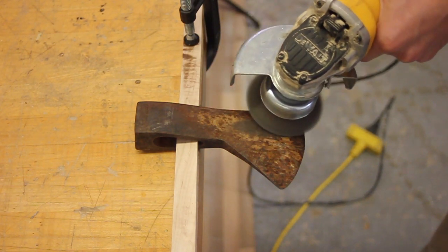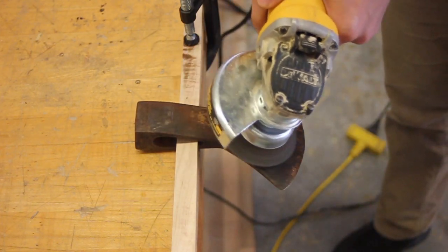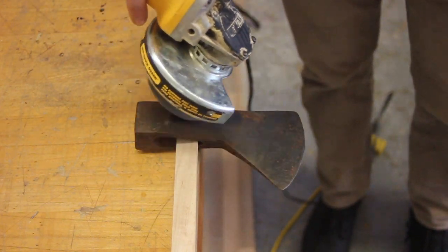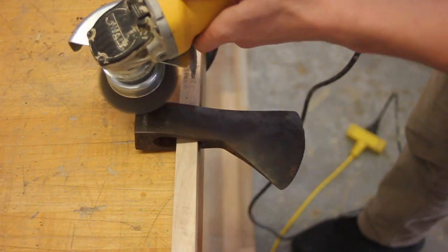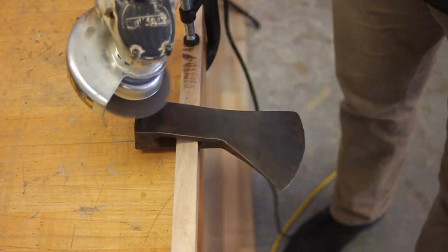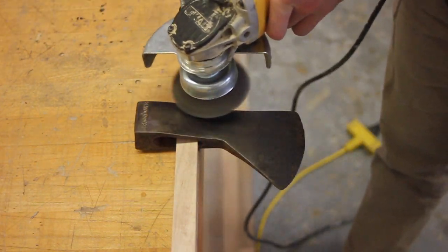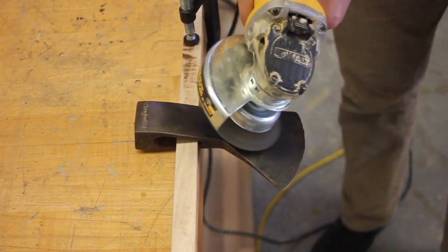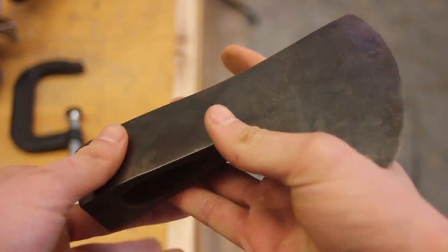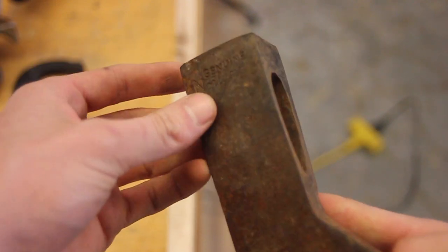We're starting out by removing the rust from the axe head using a wire wheel on a DeWalt angle grinder. As you can see, that wire wheel did a really good job pulling all that rust off and cleaning the steel up.